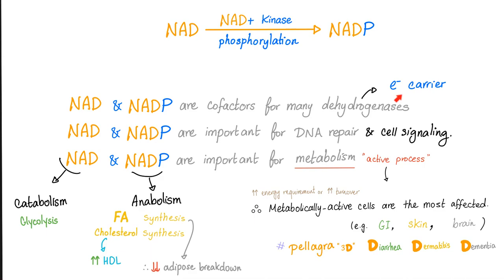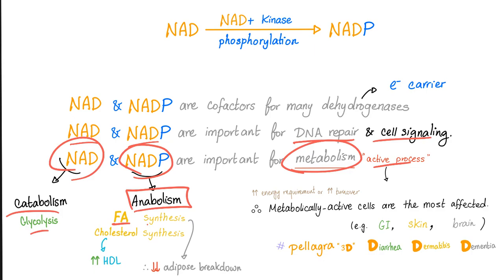NAD and NADP are cofactors for many dehydrogenase enzymes. They are electron carriers. Also, NAD and NADP are important for DNA repair and cell signaling. They are important in metabolism. NAD is important for catabolism such as glycolysis. NADP is for anabolism such as synthesis of fatty acid and cholesterol. Cholesterol synthesis includes HDL.